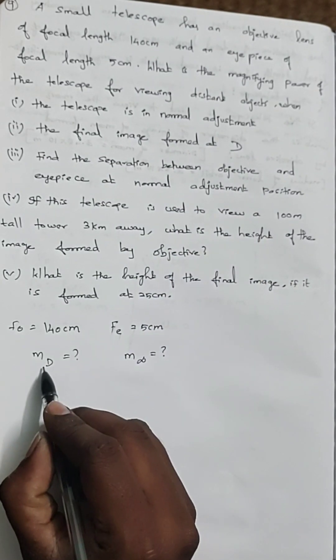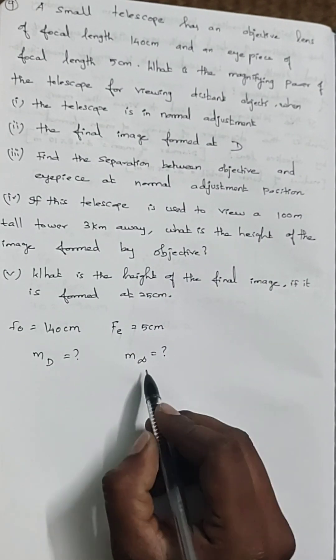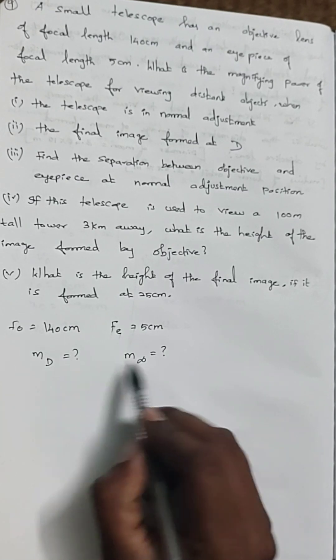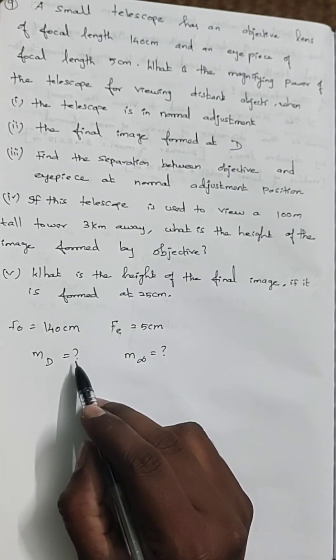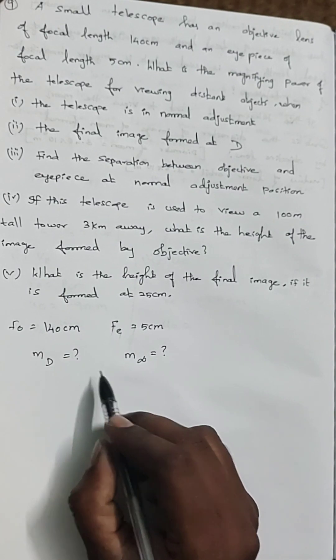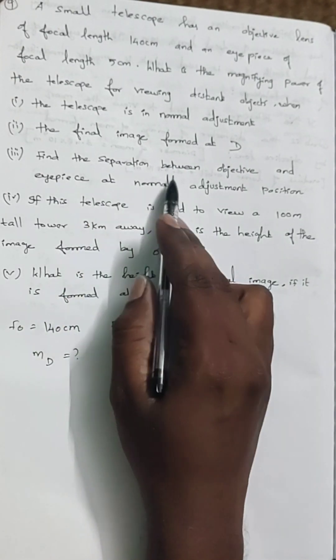We are expected to find m_d and m_infinity. This will be very easy because once you remember the formulas you can easily substitute and get the answers. Then we are expected to find the separation between the objective and eyepiece at normal adjustment position.